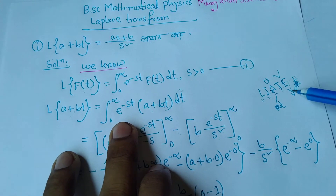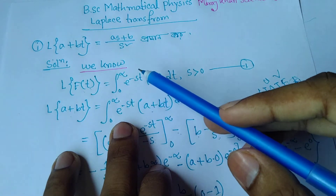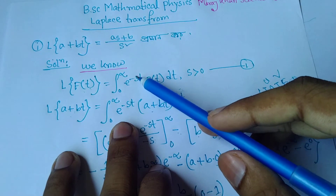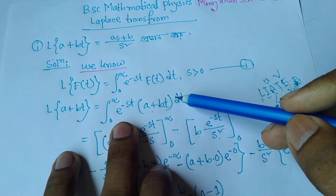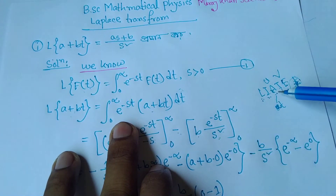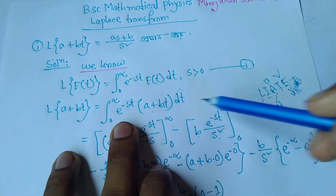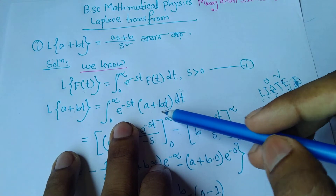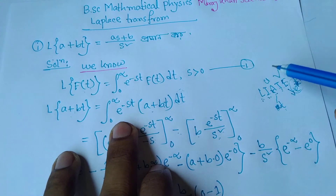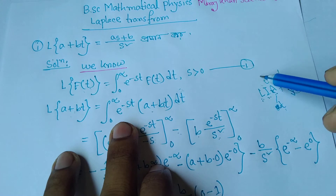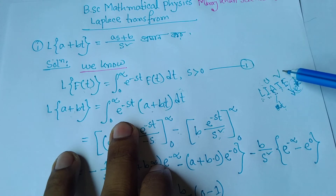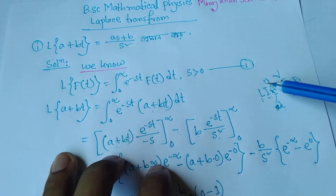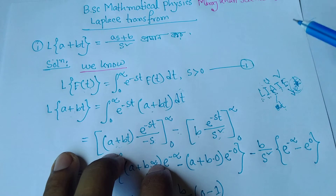For example, e to the power t is an exponential function, a to the power t, e to the power t are exponential functions. Here, A is algebraic and B is exponential. A is basically indicating that the integration is U times V (UB).